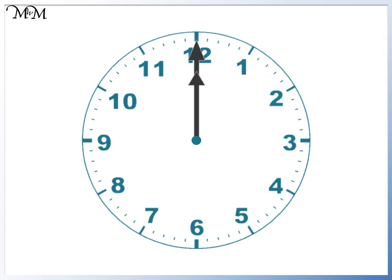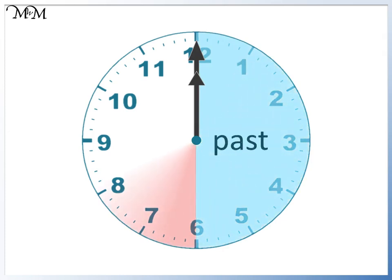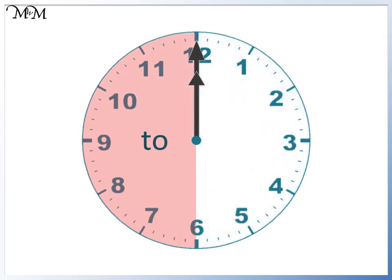We think of the first half of the clock as minutes past the hour, and we think of the second half of the clock as minutes to the next hour. In this lesson, we will be looking at minutes to the next hour.